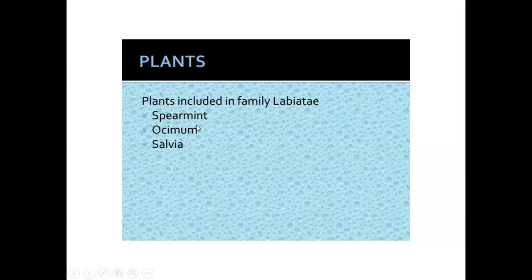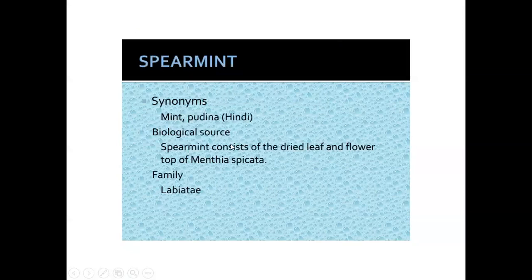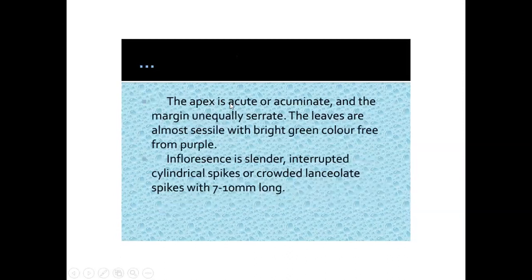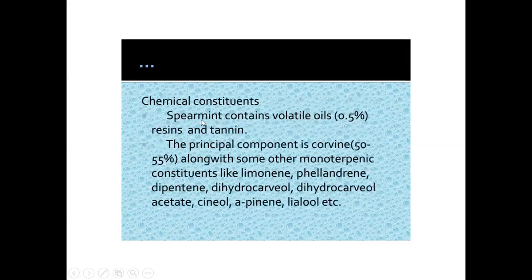Important plants include Spearmint, Ocimum, and Salvia. Spearmint consists of dried leaves and flowering tops of Mentha spicata, family Lamiaceae. Habitat: the plant is found in Europe and Asian countries and widely cultivated in the USA. It is a glabrous herb identical to peppermint, 30 cm high with creeping rhizomes, but stems are usually more purple. Leaves are opposite, lanceolate, 3–7 cm long with serrated margins, and inflorescence is slender cylindrical spikes 7–10 mm wide.